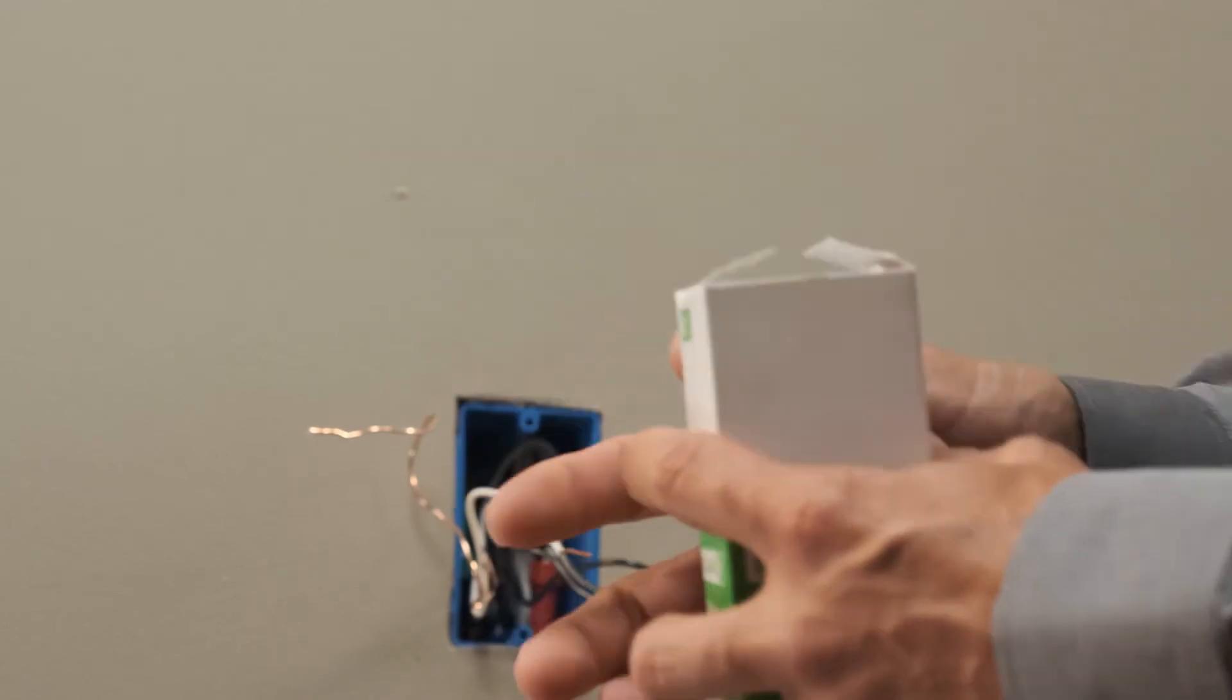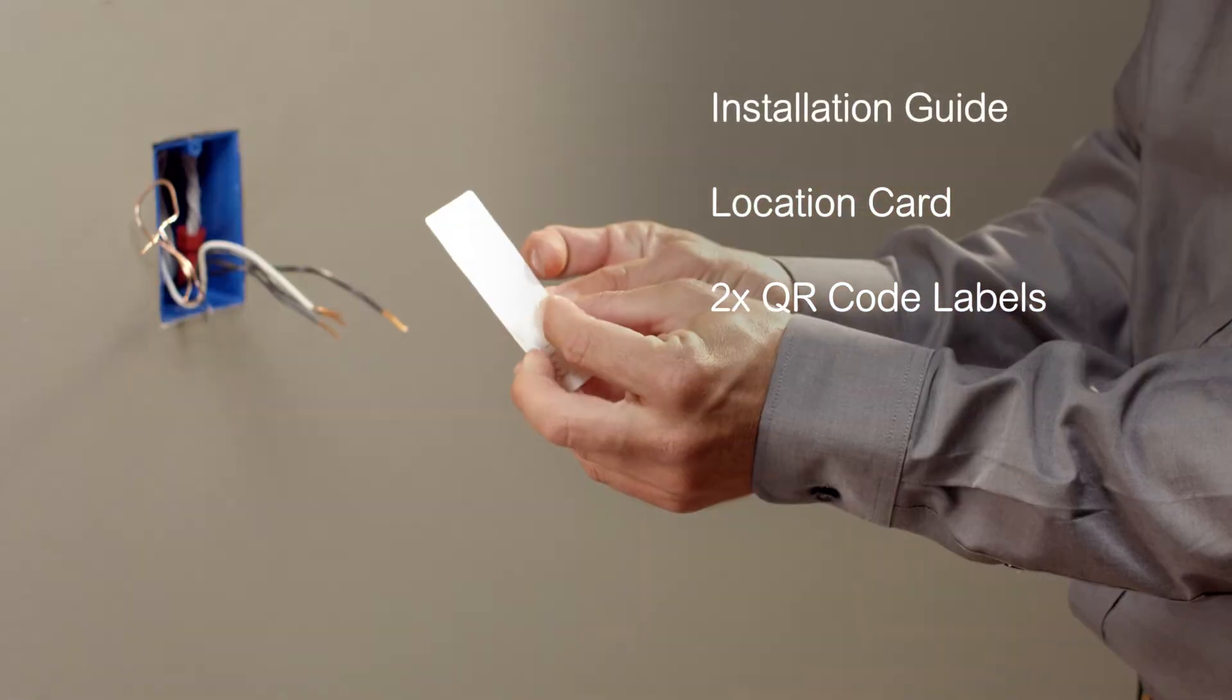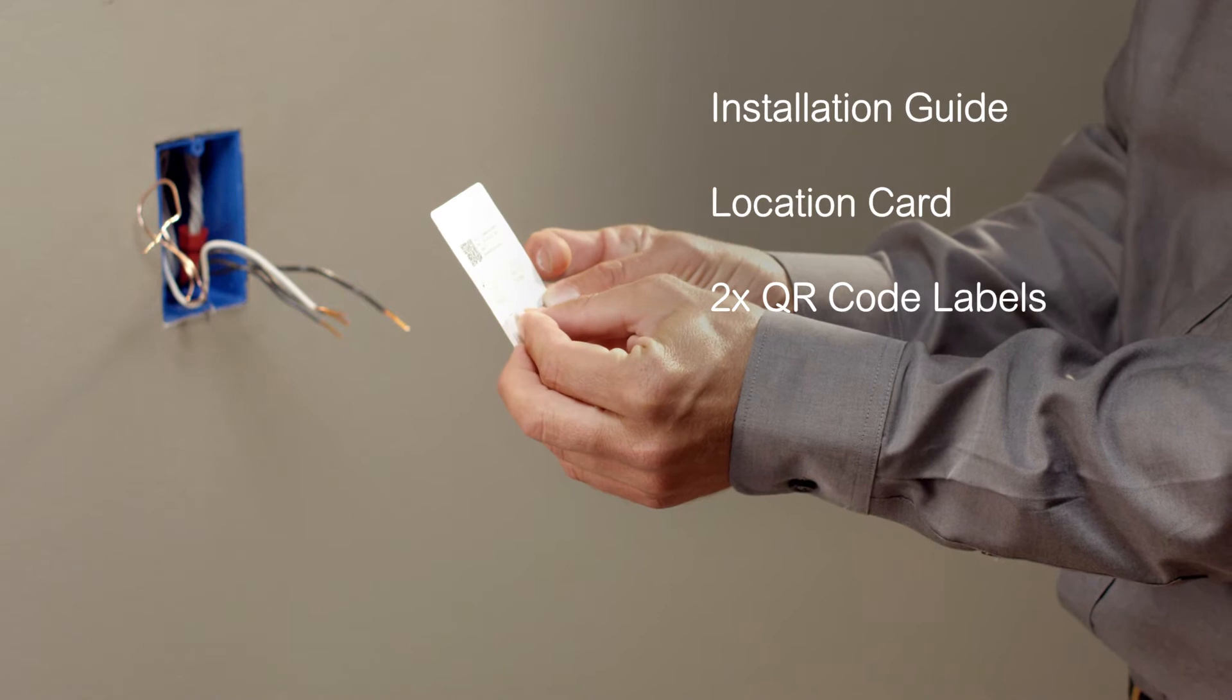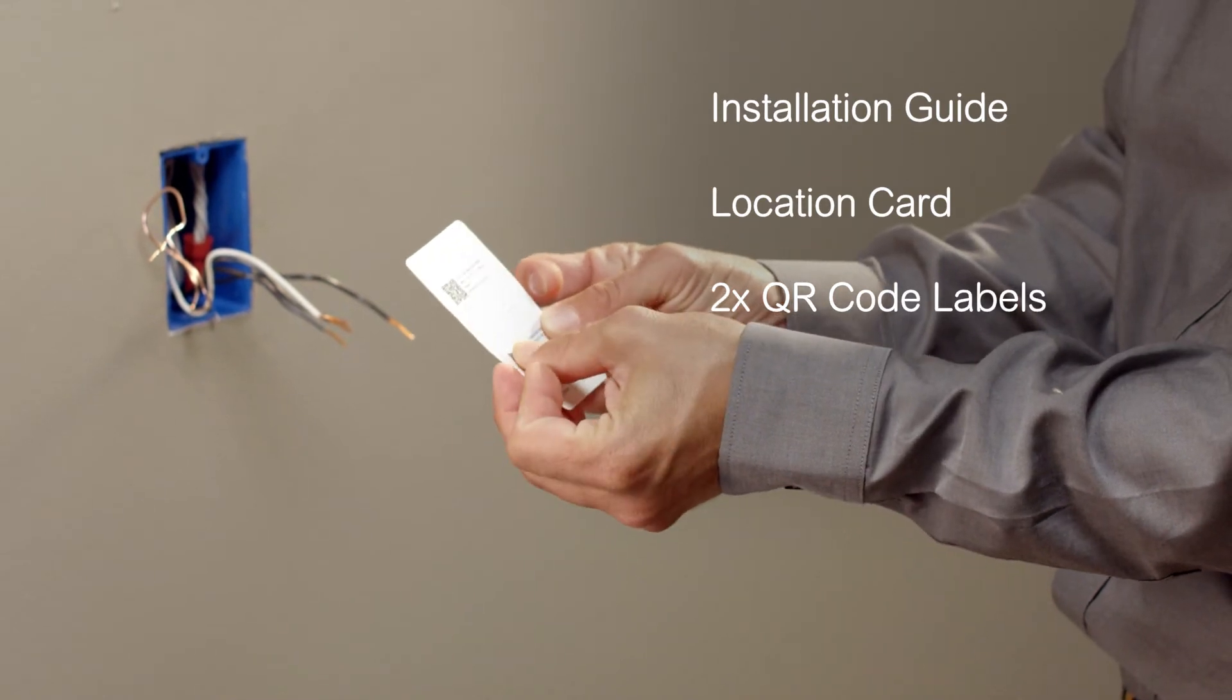Upon opening the box, you'll notice the device is wrapped in the installation guide along with a QR code location card and sheet with two QR code labels.